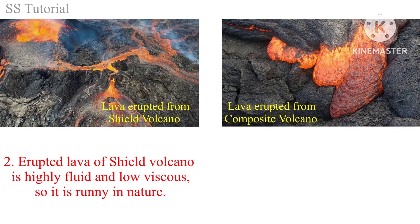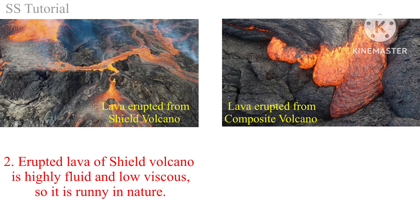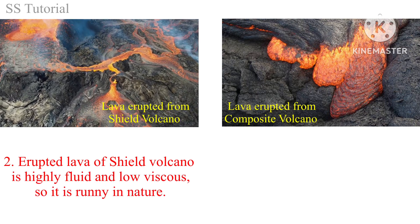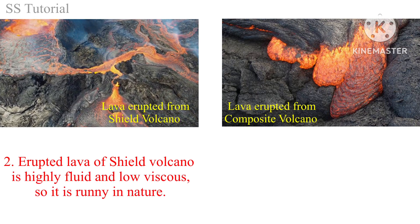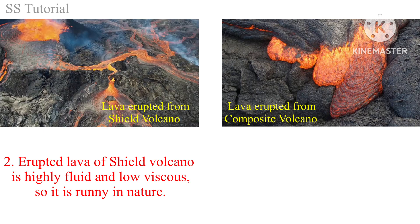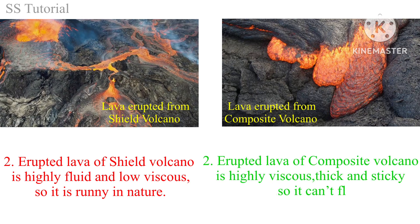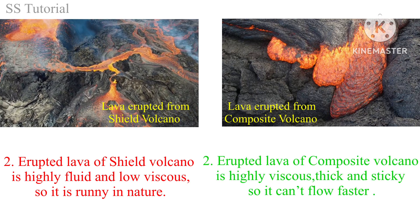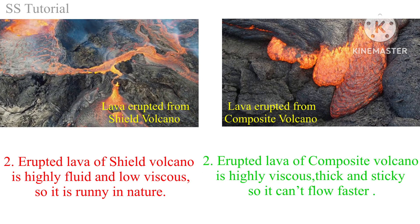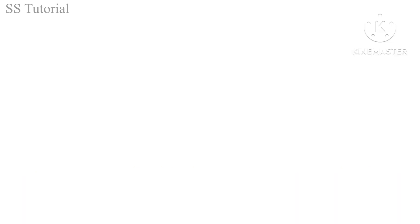Erupted lava of shield volcano is highly fluid or low viscous, that's why they are runny in nature. Whereas erupted lava of composite volcano is highly viscous, that's why it cannot flow faster.